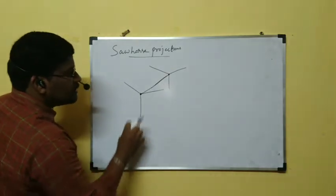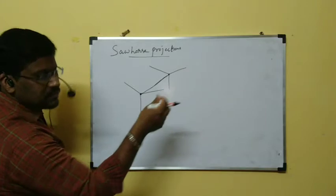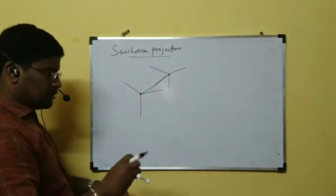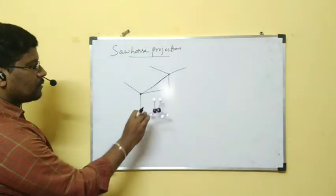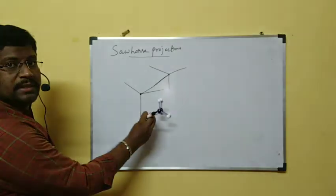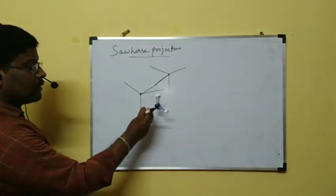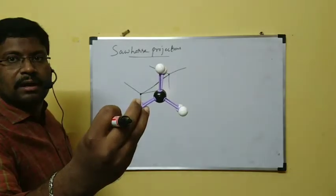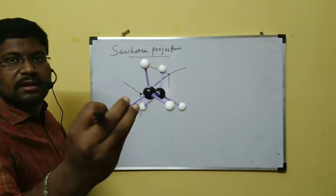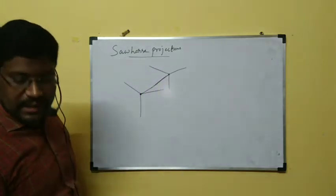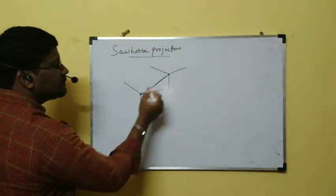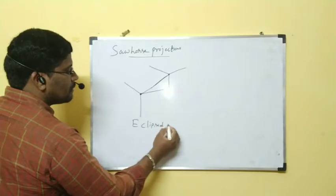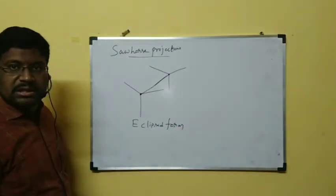See — this one and this one are exactly coincided. This is front carbon, this is rear carbon. On the board it is not possible to show three dimensionally, so I am showing at a slight angle. This is front carbon, this is rear carbon — they are exactly coincided. This is called eclipsed form.